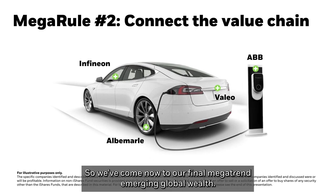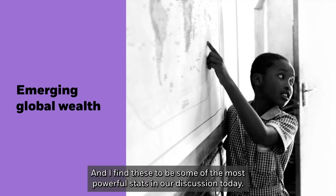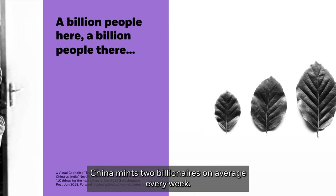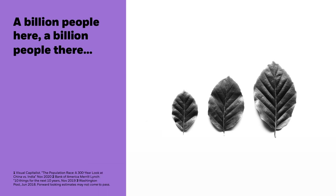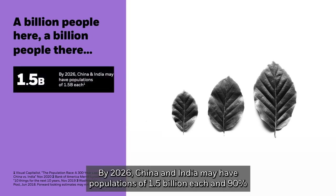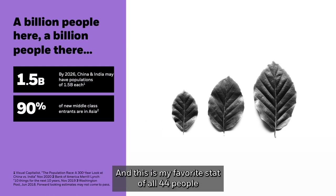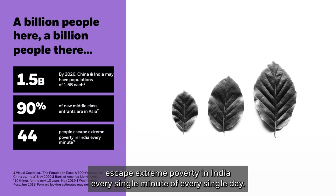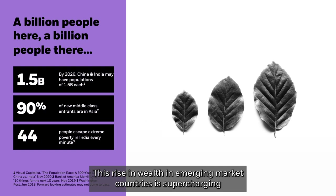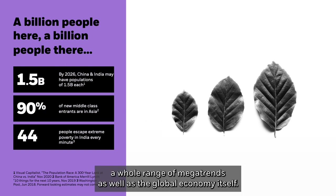Our final megatrend is emerging global wealth — some of the most powerful stats in today's discussion. China mints two billionaires on average every week. By 2026, China and India may each have populations of 1.5 billion, and 90% of new middle-class entrants are in Asia, specifically emerging markets. Most powerfully: 44 people escape extreme poverty in India every single minute of every single day. This rise in wealth in emerging market countries is supercharging a whole range of megatrends as well as the global economy itself.